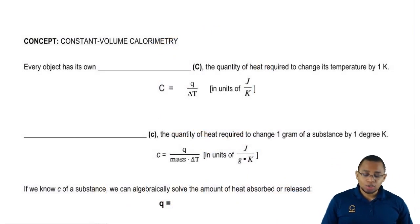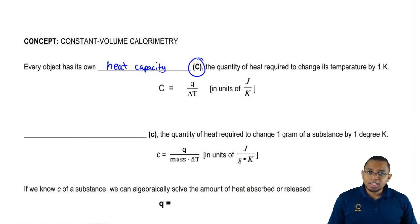First, we're going to say that every object has its own heat capacity. Just remember, heat capacity uses a capital C. This is just the amount of heat that's required to change an object's temperature by one Kelvin. Here, we're just going to say heat capacity is simply heat over the change in temperature, so final minus initial.